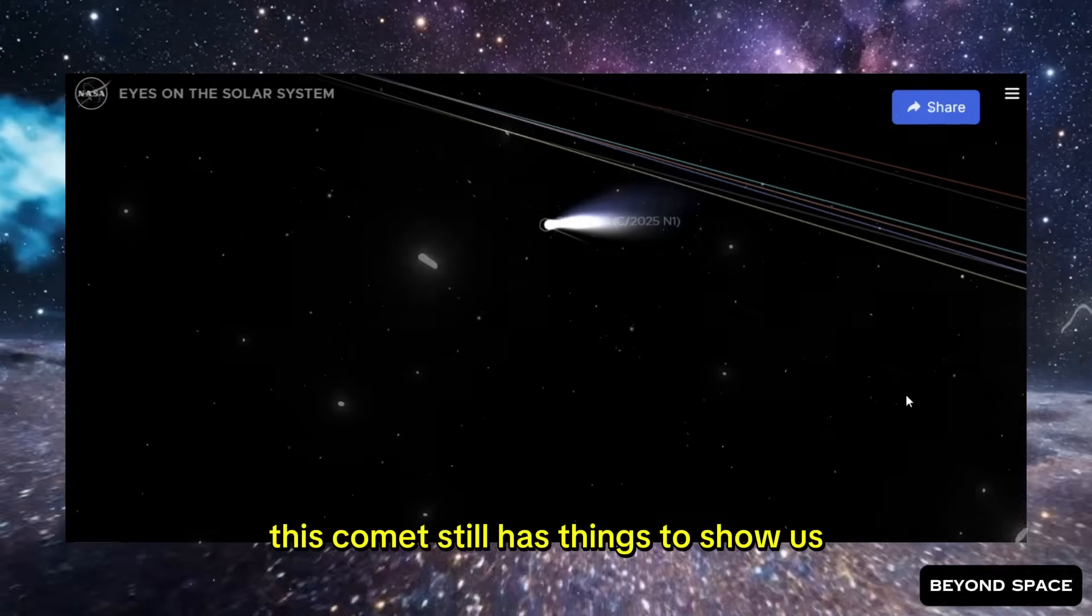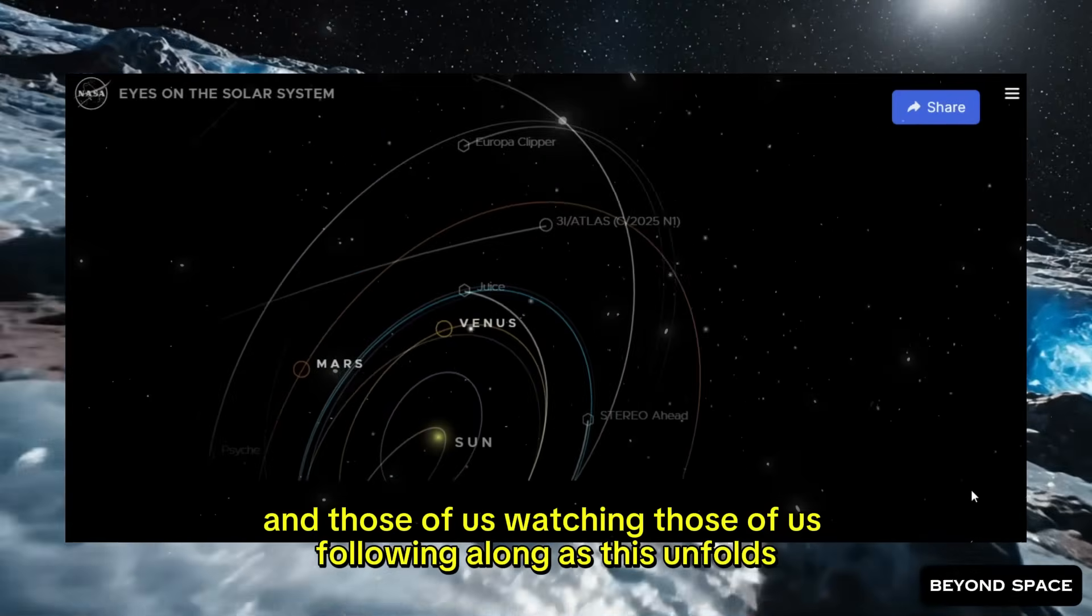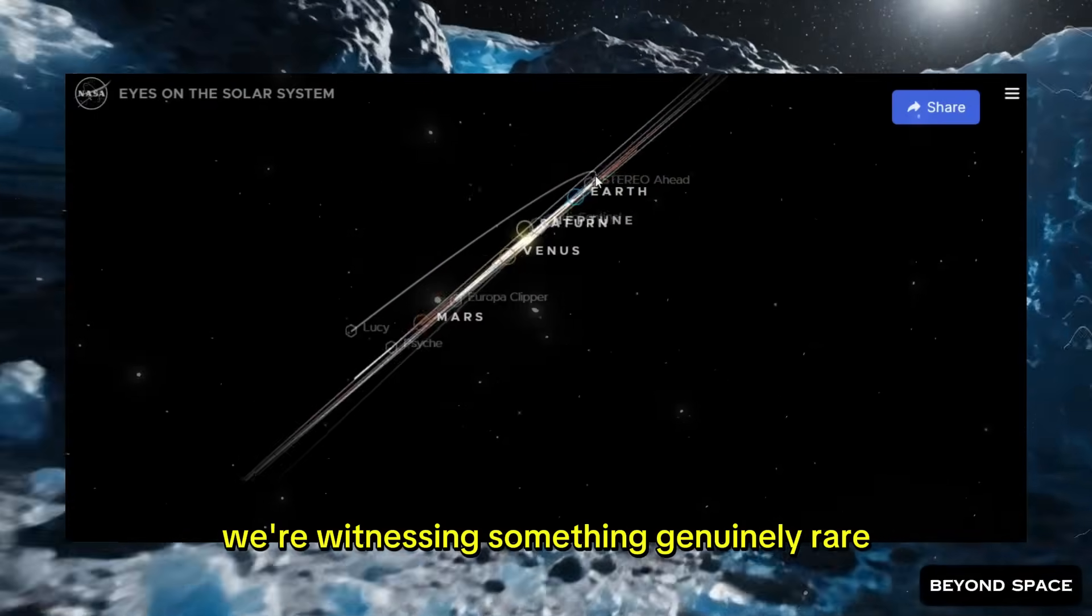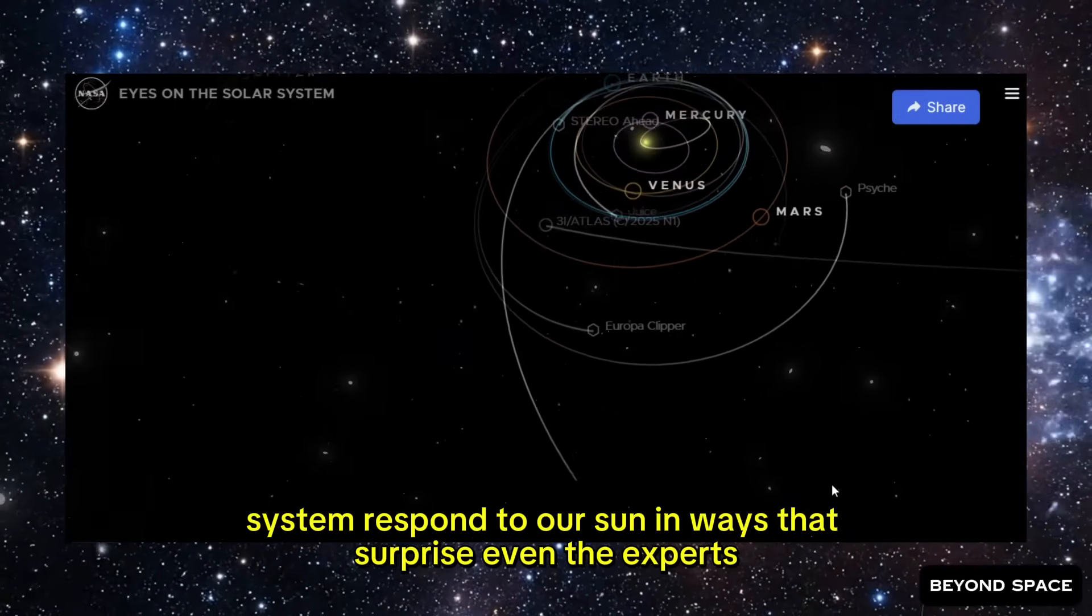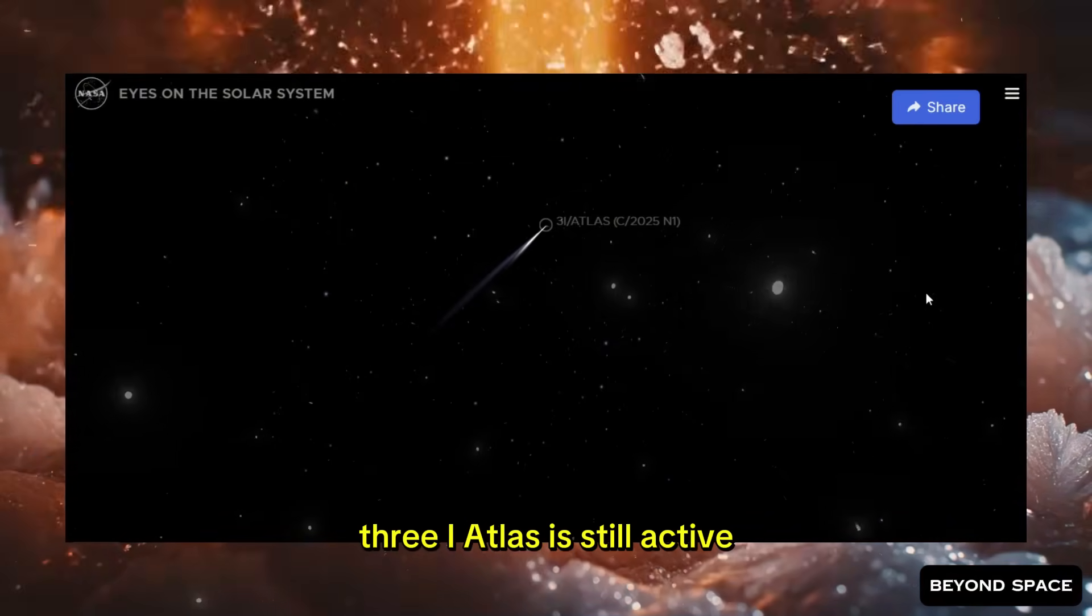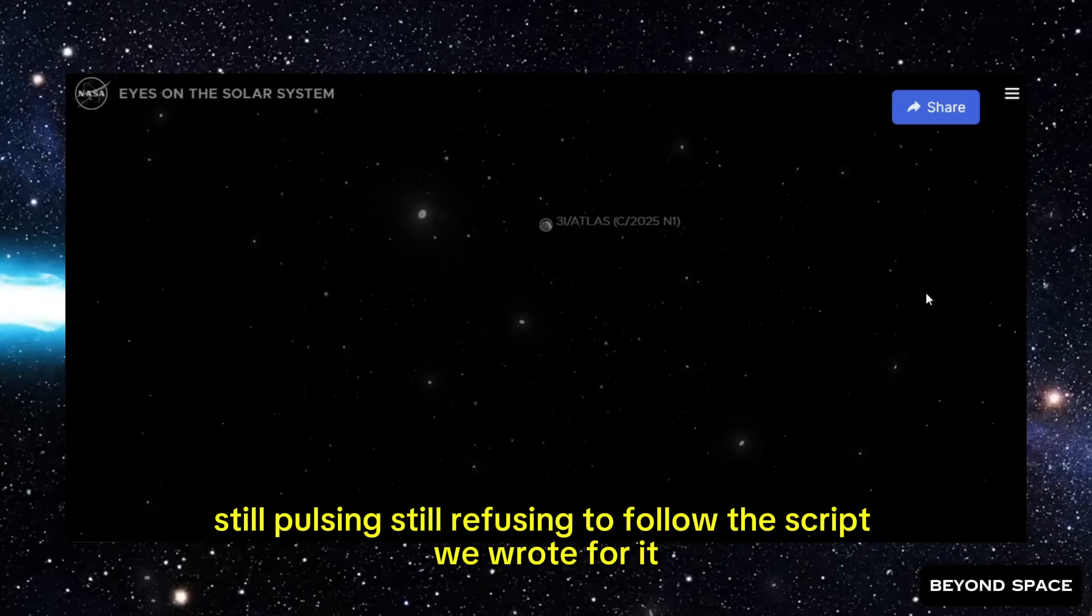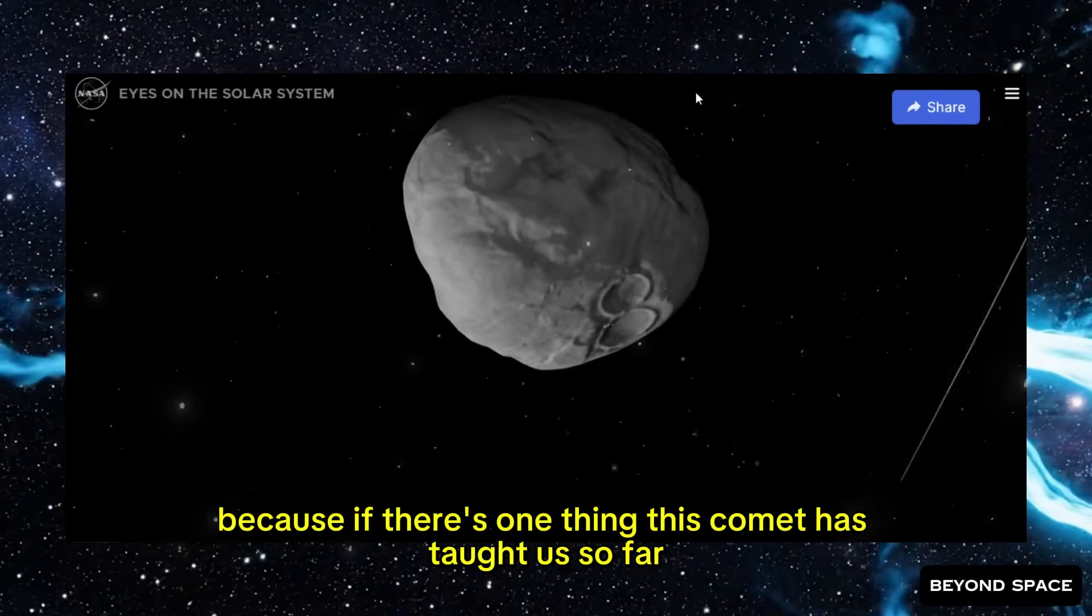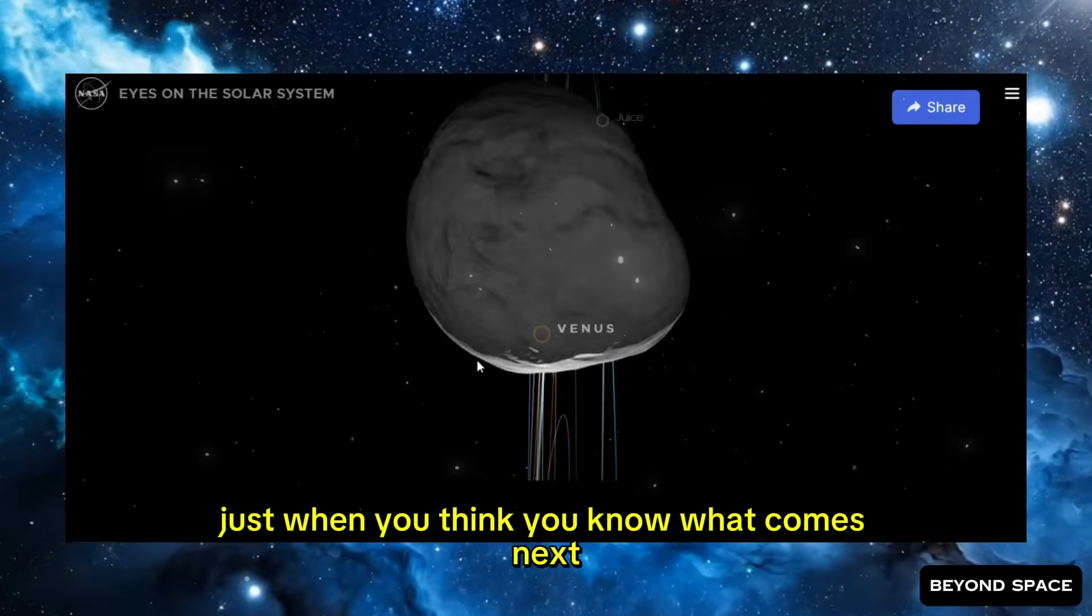This comet still has things to show us. It's still changing, still evolving, still defying expectations. And those of us watching, those of us following along as this unfolds, we're witnessing something genuinely rare. We're watching an interstellar visitor, a piece of another star system, respond to our sun in ways that surprise even the experts. So that's where we are right now. That's what the new data tells us. 3i Atlas is still active, still pulsing, still refusing to follow the script we wrote for it. And honestly, I can't wait to see what happens next. Because if there's one thing this comet has taught us so far, it's that just when you think you've got it figured out, just when you think you know what comes next, it finds a way to surprise you all over again.